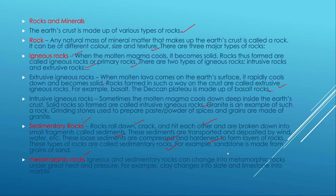Sandstone is an example of sedimentary rock — sand deposited by wind and water forms very small deposits that are compressed under pressure to make sandstone. Next are metamorphic rocks. Metamorphic means change. Igneous rocks and sedimentary rocks are changed by great heat and pressure to form metamorphic rocks.